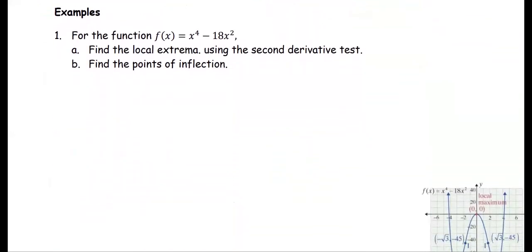Let's take a look at an example. For the function f(x) = x⁴ − 18x², in part (a) we are going to find the local extrema using the second derivative test, and in part (b) we're going to find the points of inflection.